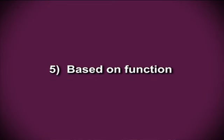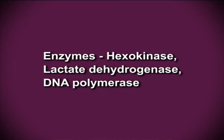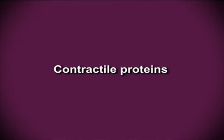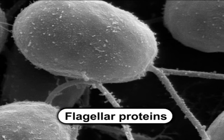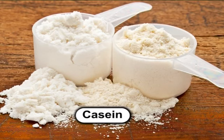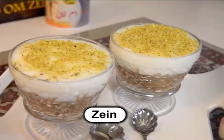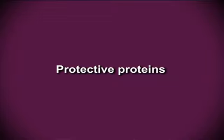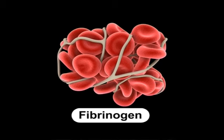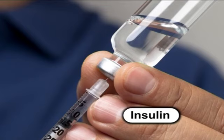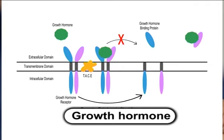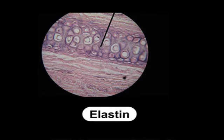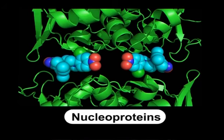The next classification of protein is based on function. On the functional basis, proteins can be classified according to their biological role as: enzymes — including hexokinase, lactate dehydrogenase, DNA polymerase; contractile proteins — including myosin, actin, flagellar proteins; storage proteins — including casein, ovalbumin, ferritin, zein; transport proteins — including hemoglobin, myoglobin and serum albumin; protective proteins — including antibodies, thrombin, complement, fibrinogen, renin; hormones — including insulin, growth hormone; structural proteins — including glycoproteins, collagen, elastin, fibrillin; and genetic proteins — including nucleoproteins and histones.